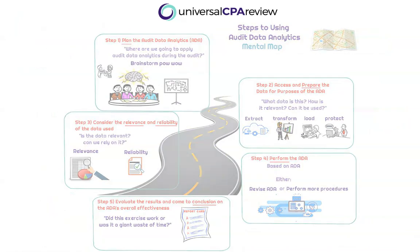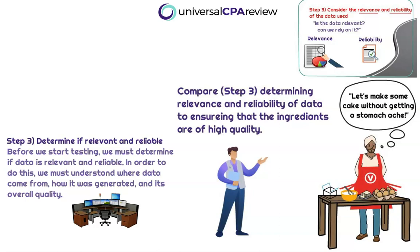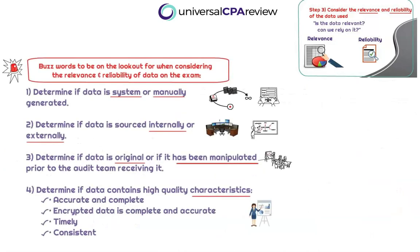Thinking about step three — we've accessed all of the ingredients, brought them home, and now we're in the lab ready to bake. But before we do that, we want to determine that the ingredients we purchased are of high quality, that they're relevant and reliable. In the audit engagement, this is where we're going to consider the relevance and reliability of the data we obtained from our client. We want to understand the source of where it came from — is the information going to be considered both relevant and reliable?